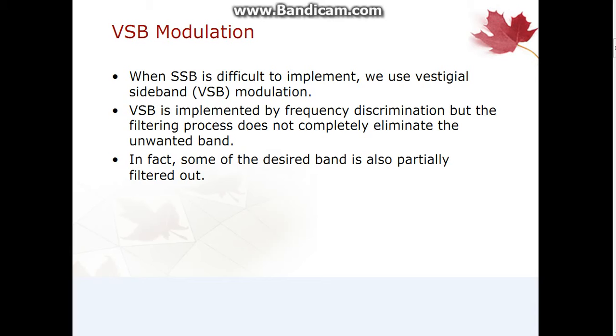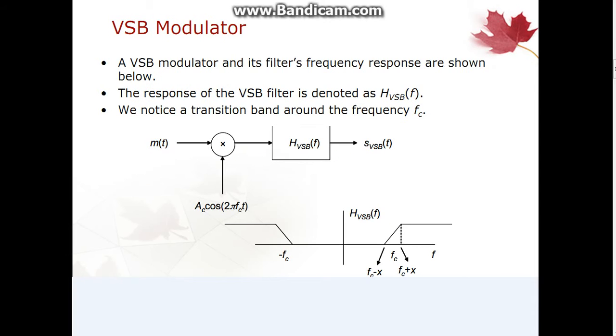Although VSB signal is implemented by frequency discrimination, the filtering process does not completely eliminate the unwanted band. In fact, some of the desired band is also partially filtered out. So here we are describing the VSB-SC signal generation process. Basically, the VSB modulator and its frequency response are shown in the figure below. The response of VSB-SC filter is denoted by H_VSB(f). We notice a transition band around the frequency FC.